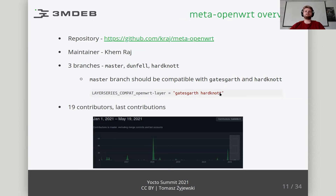Now let's go over the available Meta OpenWrt layer. The source code is available on GitHub at the link provided in the presentation. The maintainer is ChemRush, and in the repository we see three branches: Master, Dunfell, and HardKnott. On the Master branch, this layer should be compatible with the Gatesgarth and HardKnott versions — the last two stable Yocto releases. According to the available information, this layer has 19 contributors. Unfortunately, we can say Meta OpenWrt has not been much developed recently, but perhaps in the near future it will be possible to change this.